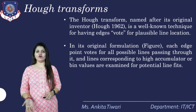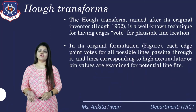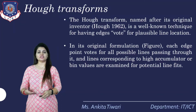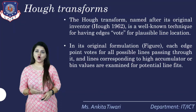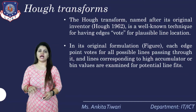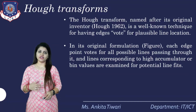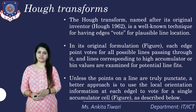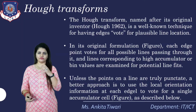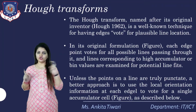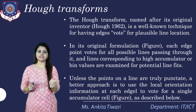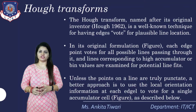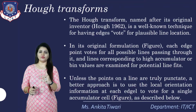In its original formulation, each edge point votes for all possible lines passing through it. Lines corresponding to high accumulator or bin values are examined for potential line prints. Unless the points on the line are truly punctual — meaning interpolation points placed between two line segments joining two points — a better approach is to use the local orientation information at each edge to vote for a single accumulator cell, as shown in the figure described below.